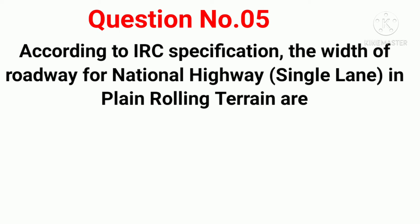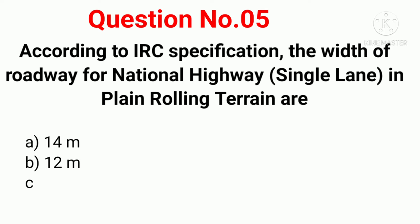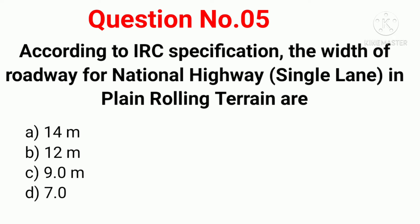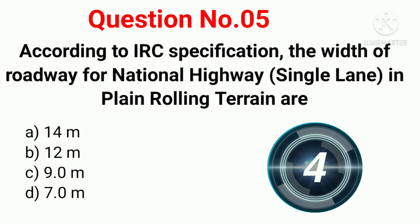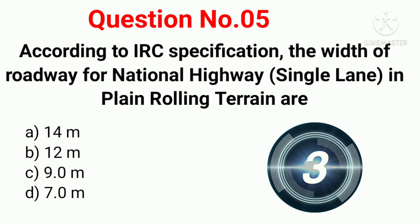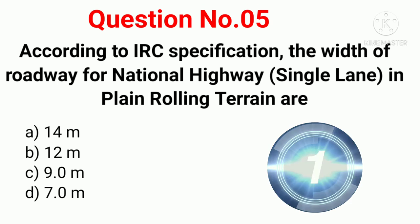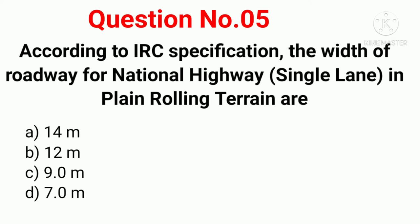Q5. According to IRC specification, the width of roadway for national highway single lane in plain and rolling terrain are: Option A: 14 m. Option B: 12 m. Option C: 9 m. Option D: 7 m. Correct answer: Option B, 12 m.